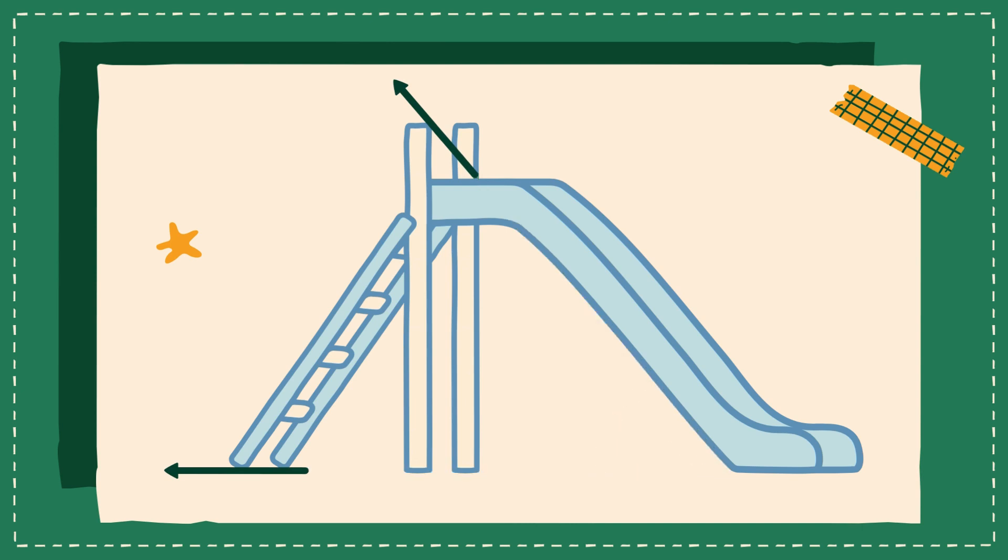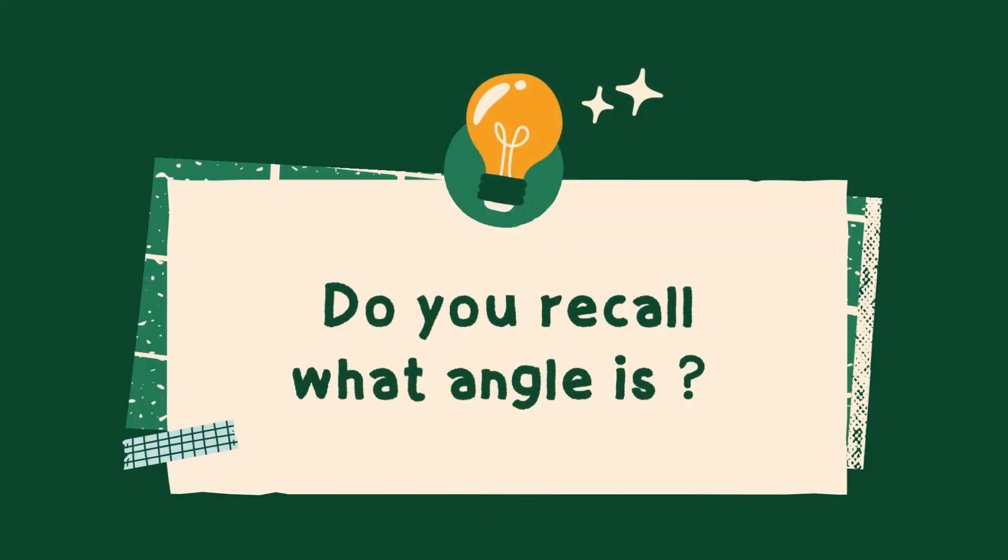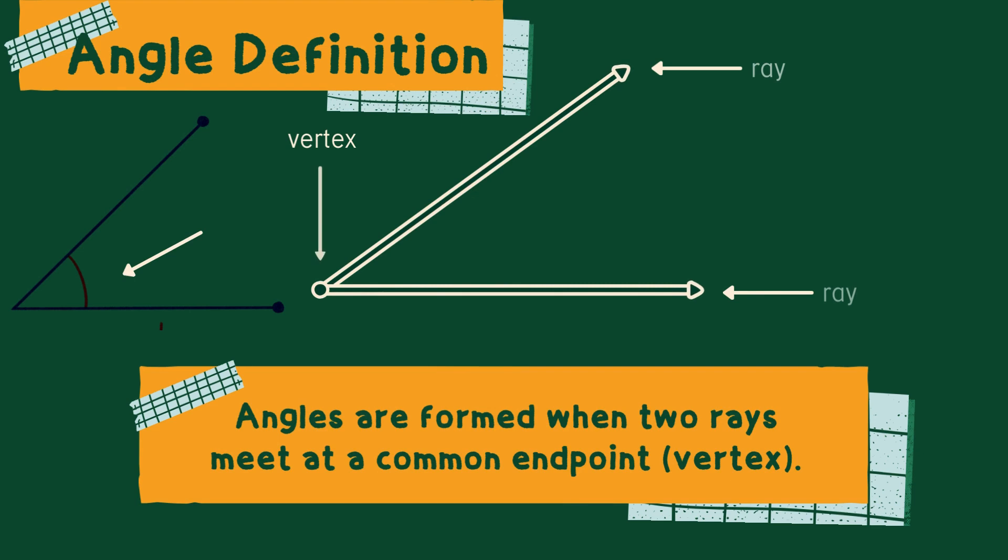By now, you might have got some idea about what an angle is. Come on kids, any guesses? The word angle comes from the Latin word angulus which means corner. An angle can be defined as the space between two intersecting lines, or as a geometrical shape formed by joining two rays at their end points. The point where the two rays meet is called vertex of an angle. The two rays are called arms of an angle.